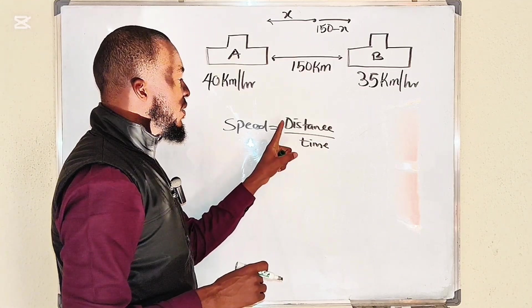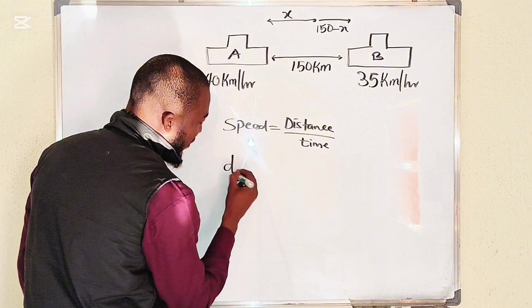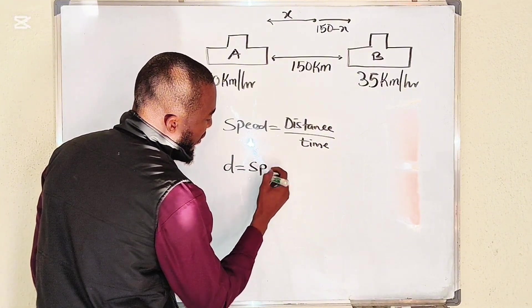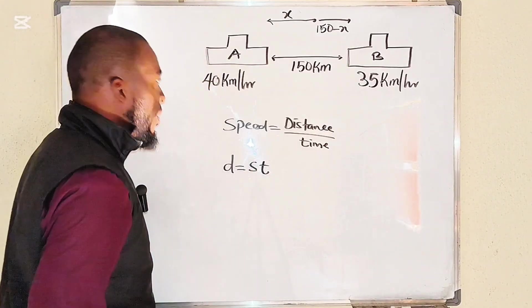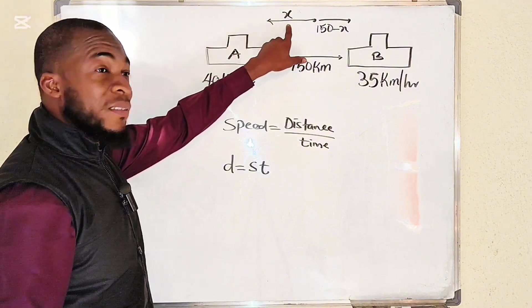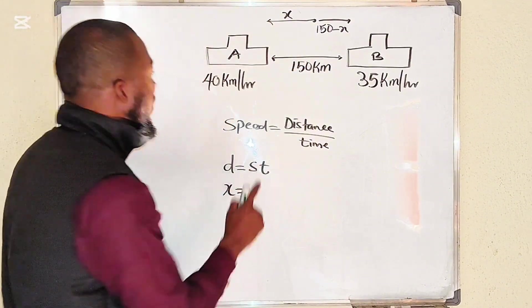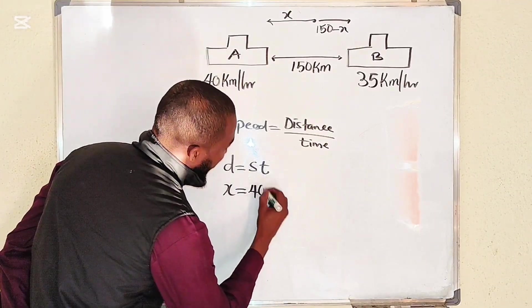So let's say that distance is equal to speed times time. Let's start with this first car. The distance covered is x, so it will be x equal to the speed, which is 40 kilometers times t.